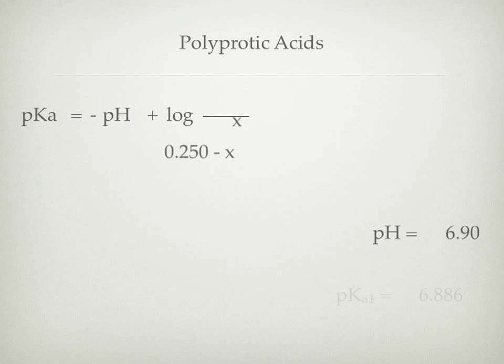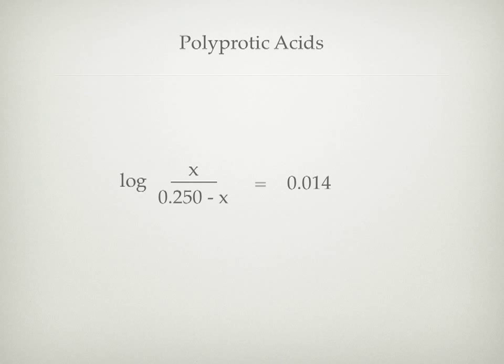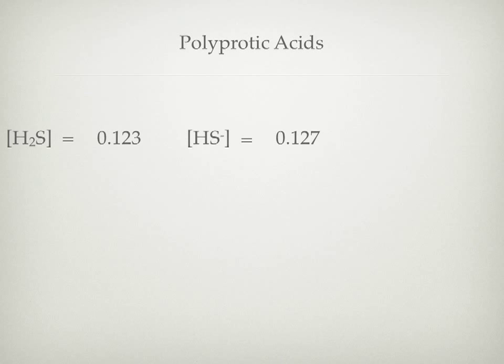We've got these values from the ICE table that we can move up to our equation. It's important to note that the pKa1 value for the first deprotonation is something we'll have to get from a table or have given — it's an empirical bit of data. Going ahead and moving those values in, we solve the math: we get rid of the log and solve for x, giving us x = 0.127. That gives us the concentration of H₂S and the concentration of HS⁻.